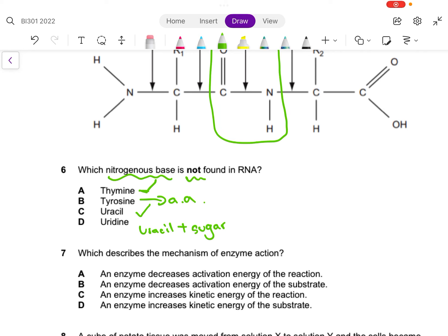So which nitrogenous base is not found in RNA? A and C are nitrogenous bases, B and D are not. So which one is not found in RNA? Thymine is not found in RNA - uracil is found in RNA, thymine is found in DNA. So the answer is A.